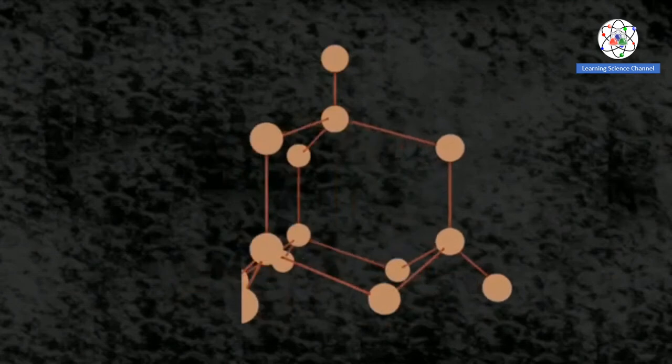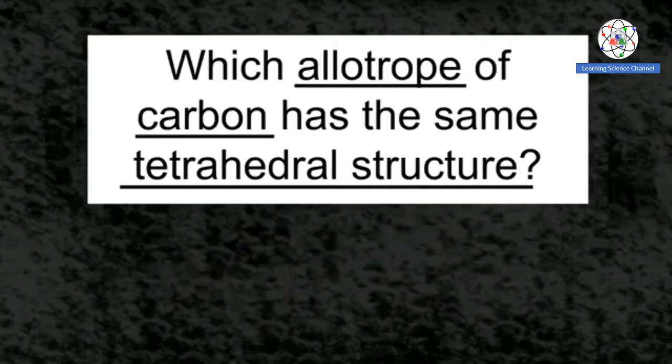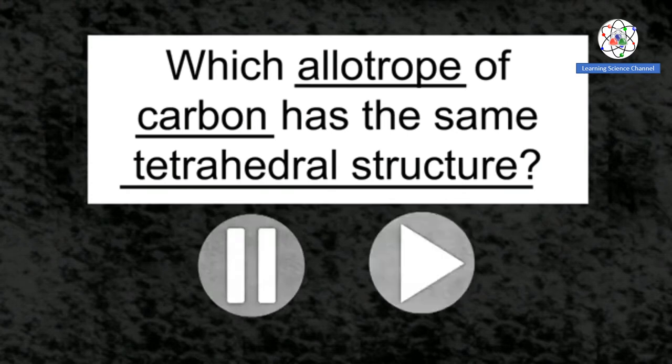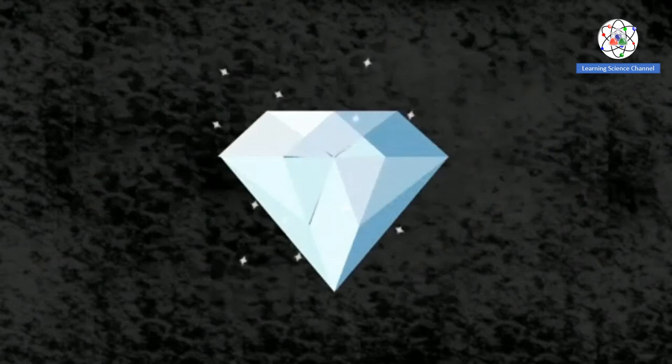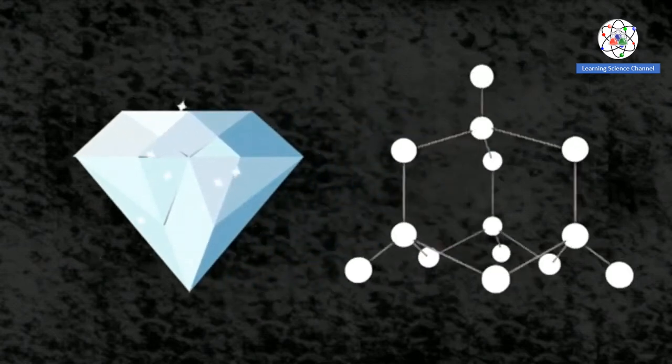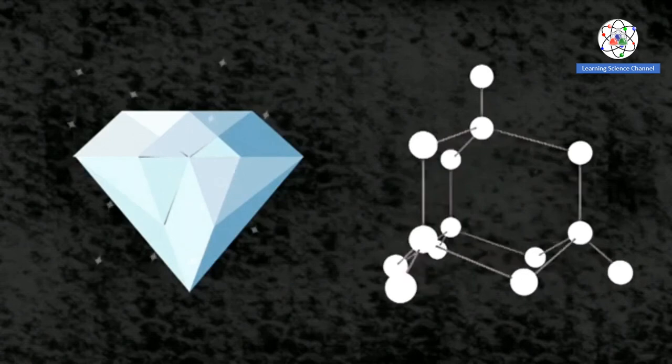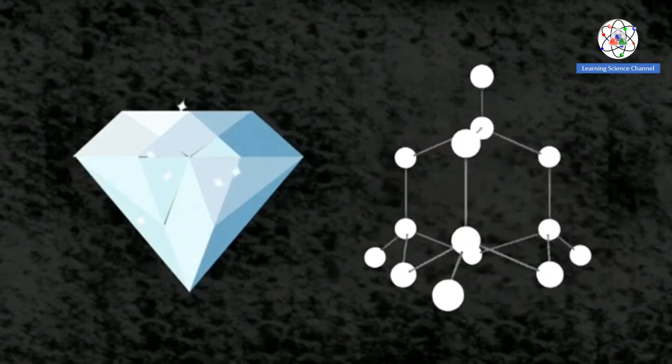Here is a challenge for you. Which allotrope of carbon has the same tetrahedral structure? Pause, think, and continue when ready. The answer is a diamond. Each carbon atom is covalently bound to four other carbon atoms in the same tetrahedral arrangement.